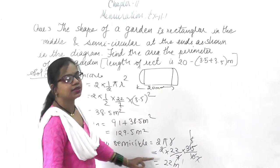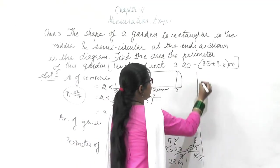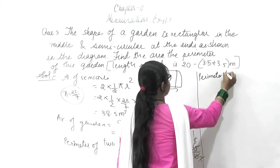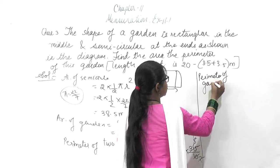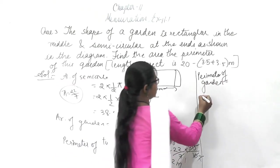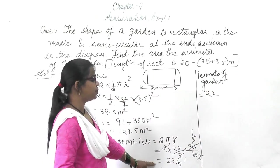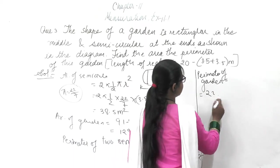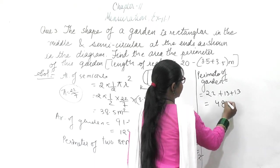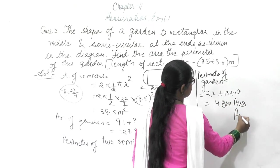The perimeter of the 2 semicircles is 22 meters. The perimeter of the garden will be the perimeter of the 2 semicircles plus the two lengths of the rectangle: 22 plus 13 plus 13, which equals 48 meters. This is the answer.